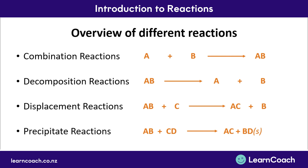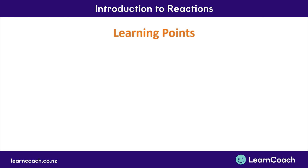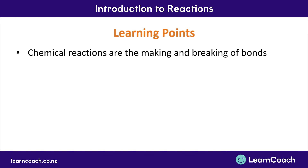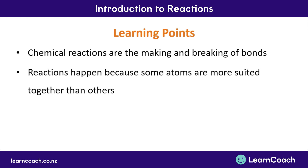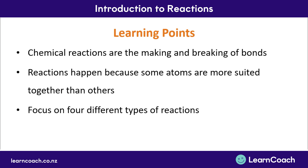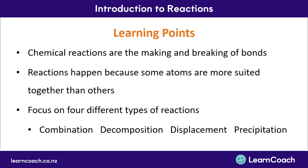In the following videos, we're going to be focusing on each individual reaction — breaking down why they happen, observations that we will see, and going through some exam questions. From this video, take away that chemical reactions are the making and breaking of bonds for the rearrangement of atoms to form new substances. Reactions happen because some elements are more active than others, and the four types of reactions are combination, decomposition, displacement, and precipitation reactions.